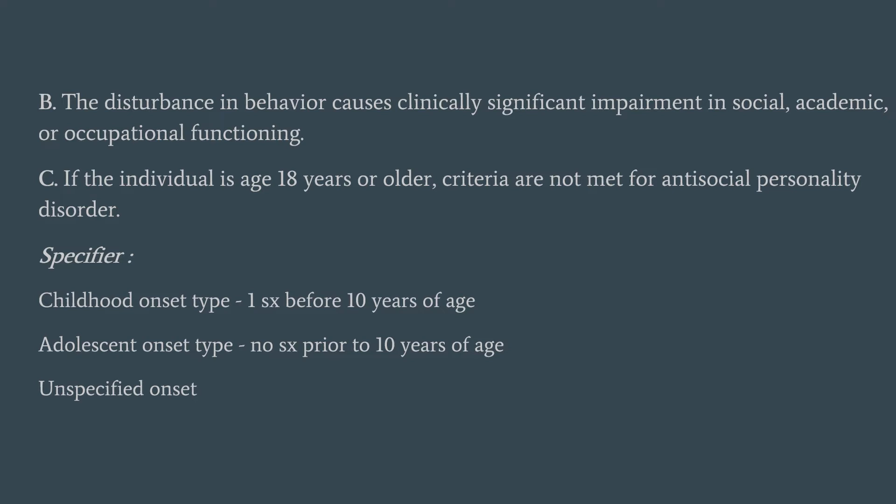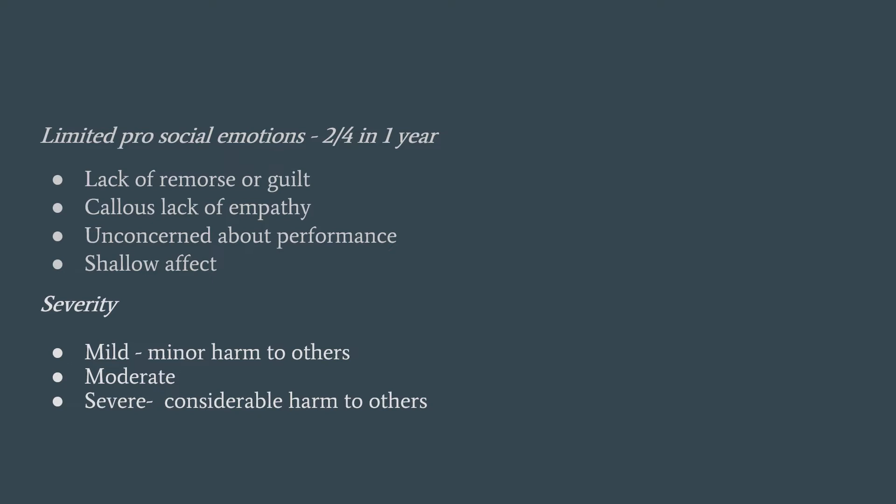There are specifiers used in this diagnosis. It can be of childhood onset type, where at least one symptom should have started prior to the age of 10 years. Adolescent onset type, where none of the symptoms were present prior to the age of 10 years. And unspecified onset type. Another specifier is that a patient has limited prosocial emotions. Under this specifier, two out of the following should have been present for a period of one year: lack of remorse or guilt, callousness — that is lack of empathy — unconcerned about their performance, and having a shallow affect. Two out of these four should have been present for a period of one year.